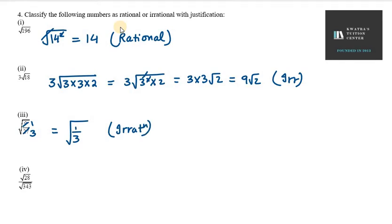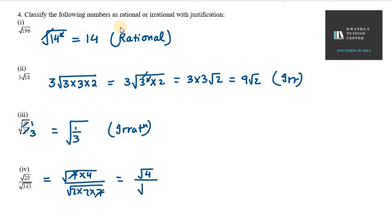Next is √(28/343). We write 28 as 7 × 4 and 343 as 7 × 7 × 7. At the numerator we get √4, which is √(2²) = 2, and at the denominator √(7²) = 7. So we get 2/7, which is in the form P/Q and therefore a rational number.